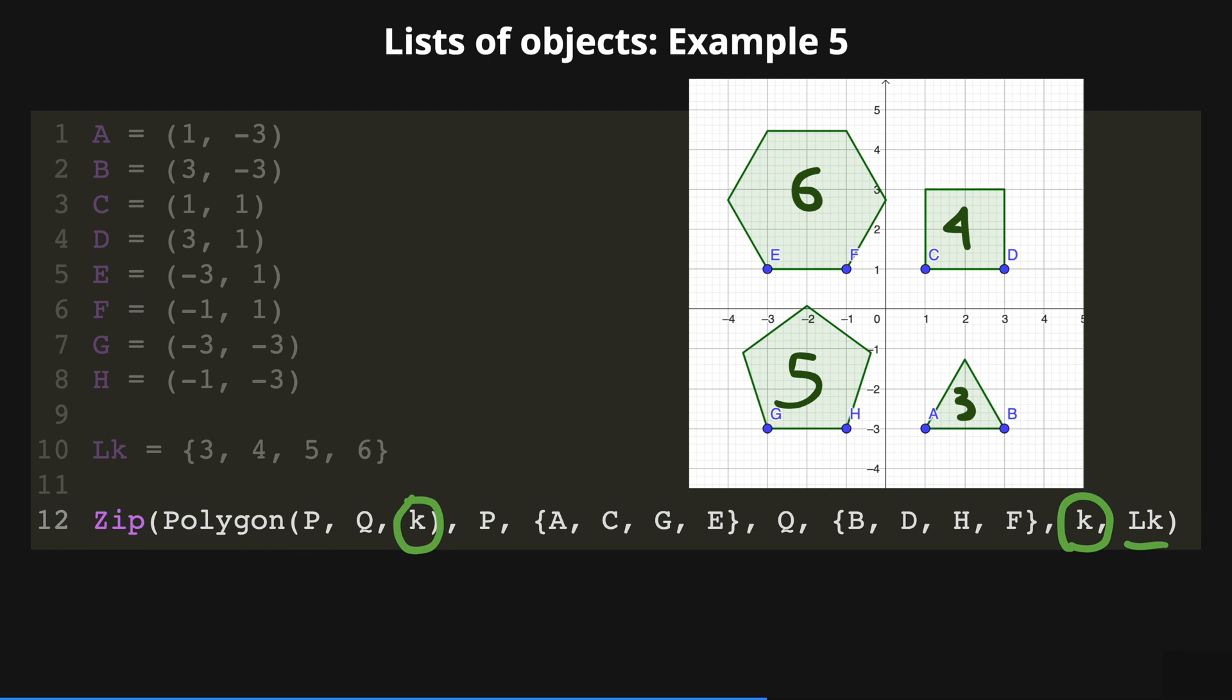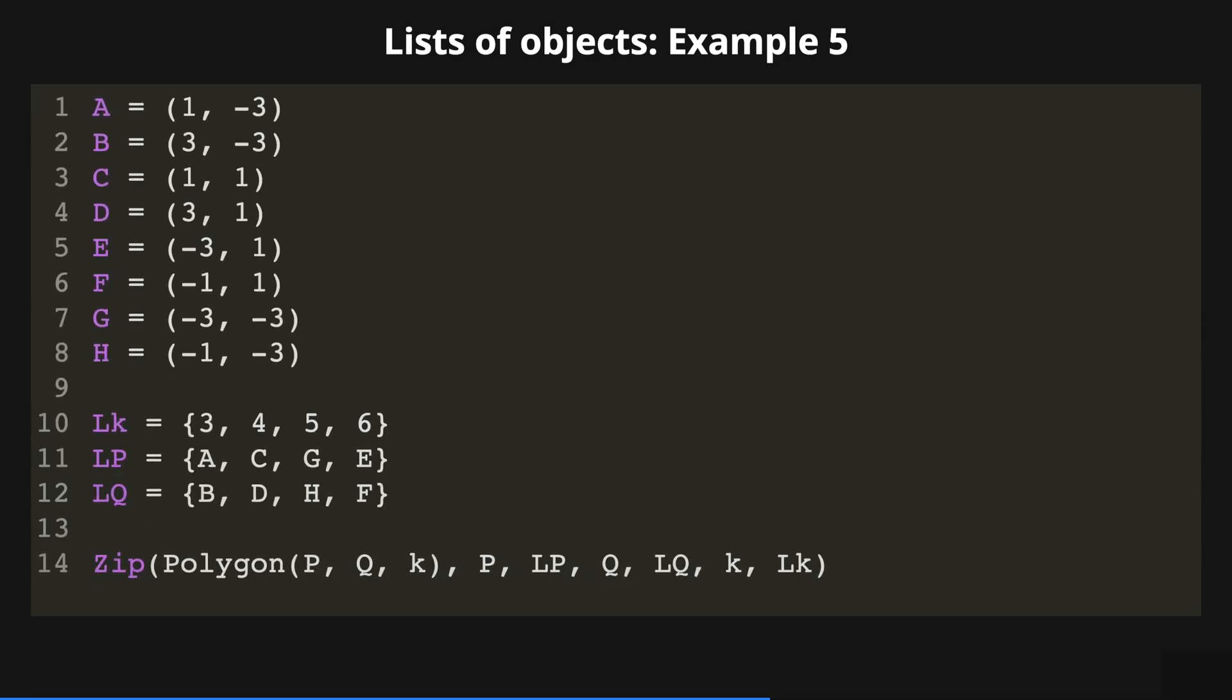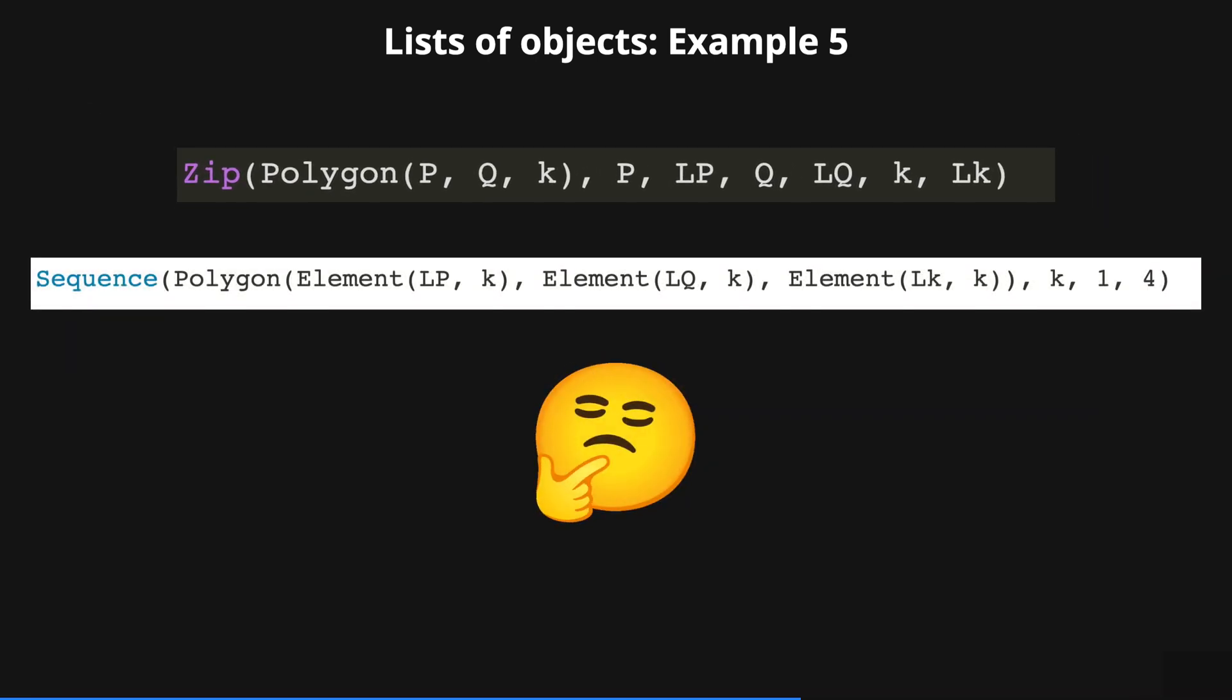We can improve this code a little bit better by defining the list Lp and Lq so that we can use them within the zip command. Again, we can use the sequence command to obtain the same result but, as you can appreciate here, the zip command seems to be a better option when typing code in GeoGebra.